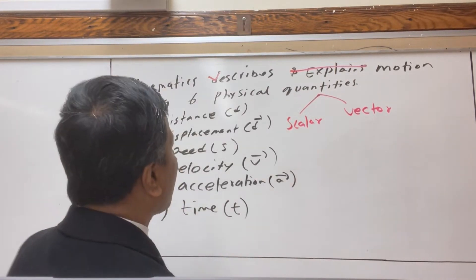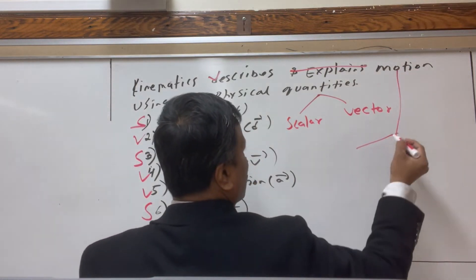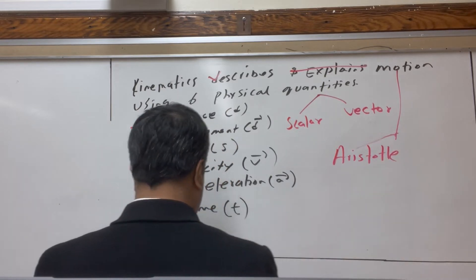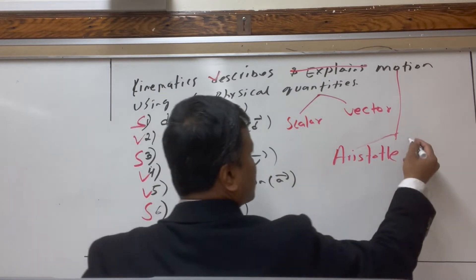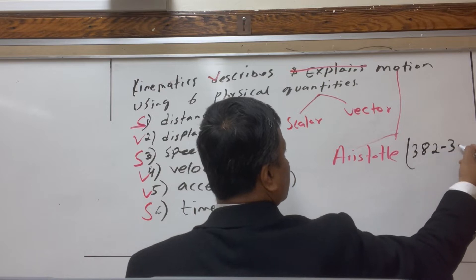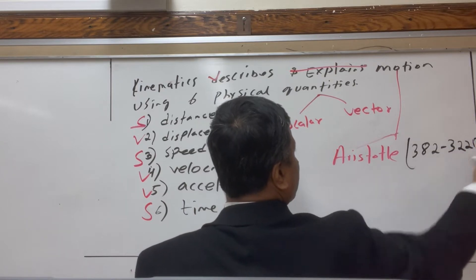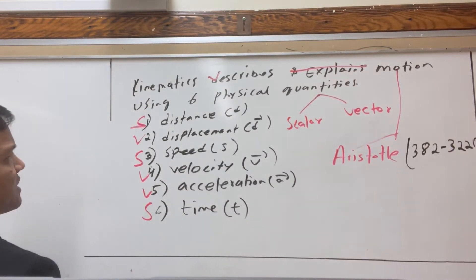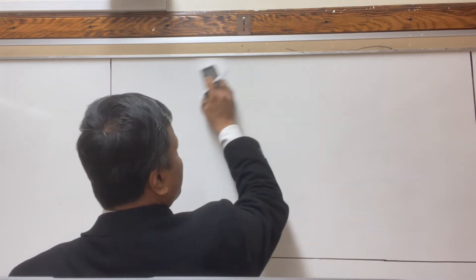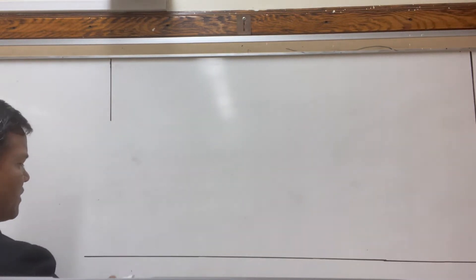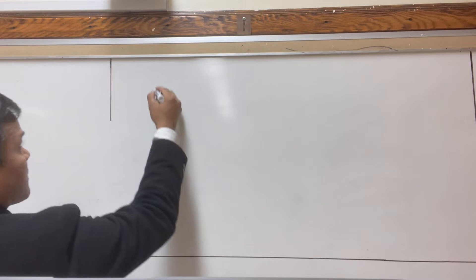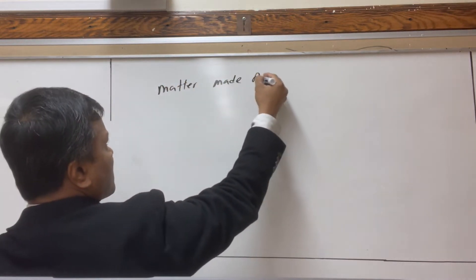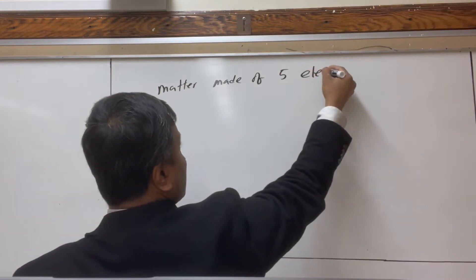Now, when we talk about motion, Aristotle — who was born in 382–322 BC — divided motion into two types. That's what we're going to be talking about. He divided motion into two parts. According to Aristotle, matter is made of five elements.